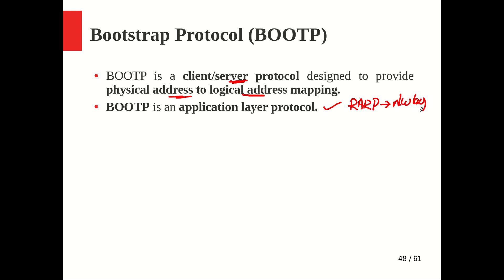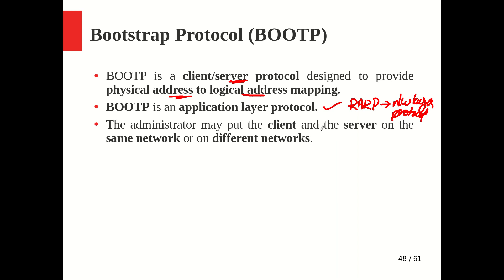The administrator may place the client and server on the same network or on different networks. With Reverse ARP, this is not possible because communication happens at the data link layer. The Reverse ARP request is created as an Ethernet frame and broadcasted, so it cannot cross the network boundary. The server must be on the same network as the client, meaning you need as many Reverse ARP servers as there are subnets.